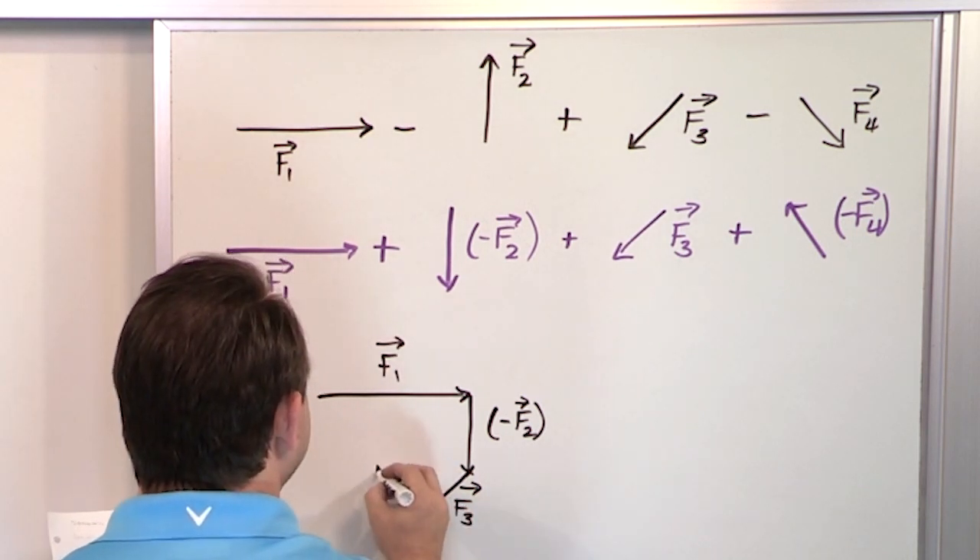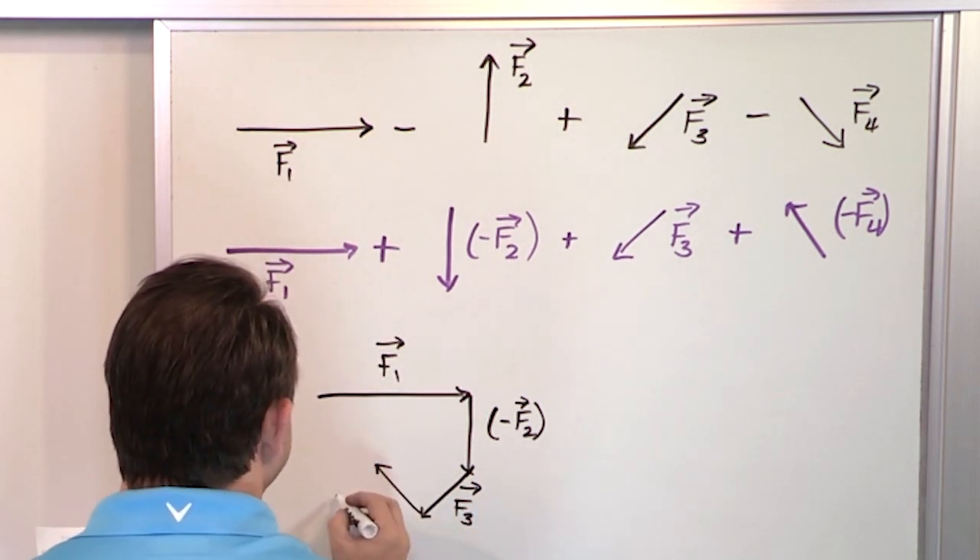Then we're going to add to that F3, which is angled this direction. And we're going to add to that F4, which goes up like this. But it's actually not F4. We call it negative F4.